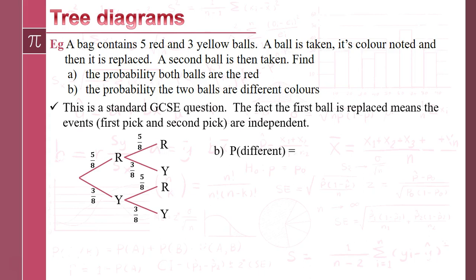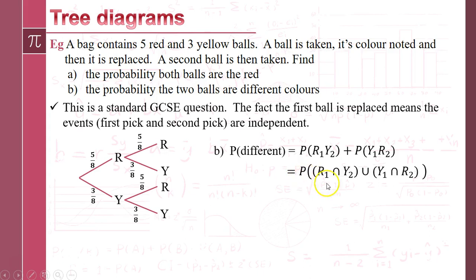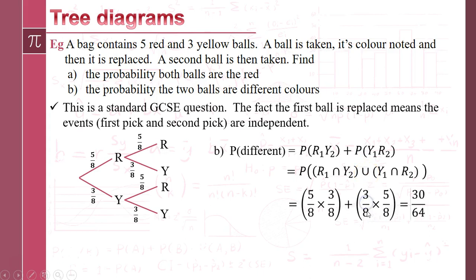If we look at the probability that the balls are different colors, we're looking at two options: branch R₁Y₂ and branch Y₁R₂. In terms of probability notation, we have the intersection of those two events combined with an OR, so we add the outcomes from the two branches together. There's our calculation and the answer is 30 over 64.